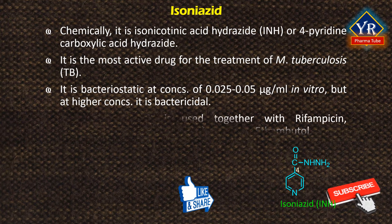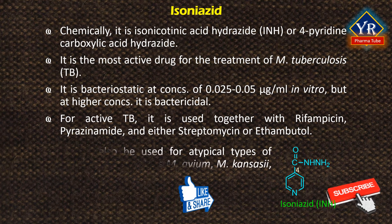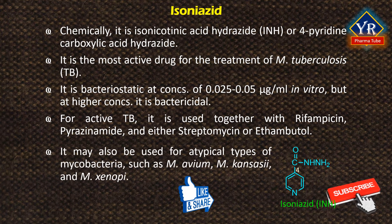For active tuberculosis, it is often used together with rifampicin, pyrazinamide, and either streptomycin or ethambutol. For latent tuberculosis, it is often used by itself. It may also be used for atypical types of mycobacteria such as Mycobacterium avium, Mycobacterium cansasi, and Mycobacterium xenopi.